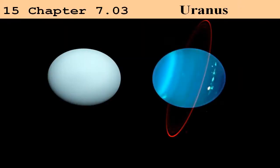We're going to look at the third lecture for Chapter 7, so this will conclude our study of Chapter 7. This particular lecture is focused on Uranus and Neptune, the other two Jovian planets.